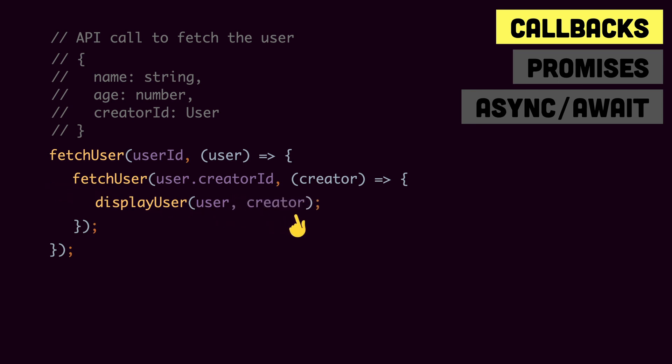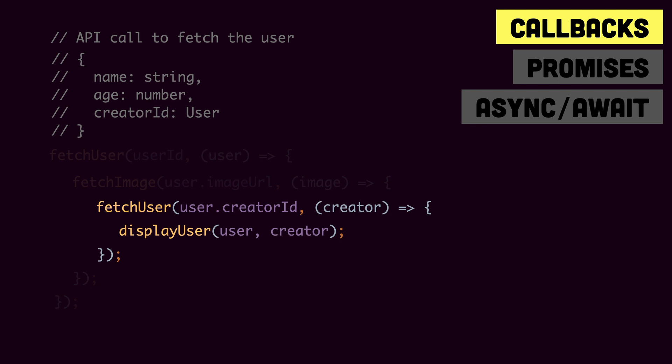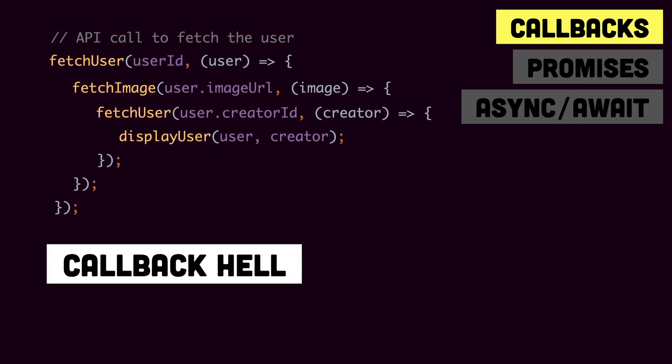Later on, let's say we are required to add the image as well. So we will add one more callback called fetchImage and modify displayUser to show the image as well. Now if you look closely at this function, we have a lot of callbacks, and whenever we need to add more functionality we end up adding more and more callbacks — a callback within fetchImage within fetchUser. So we end up with callback hell.